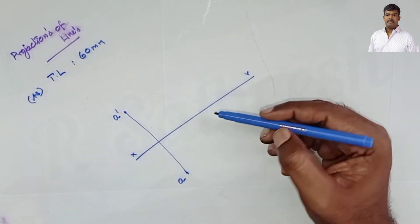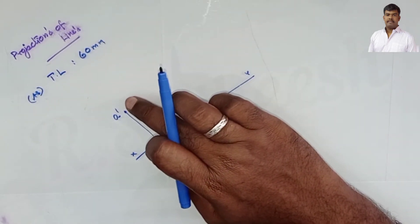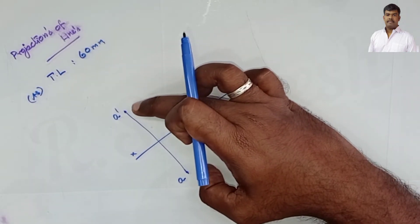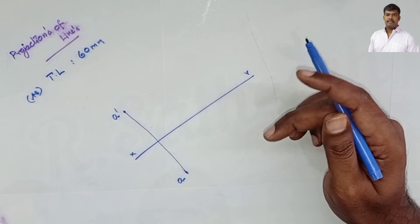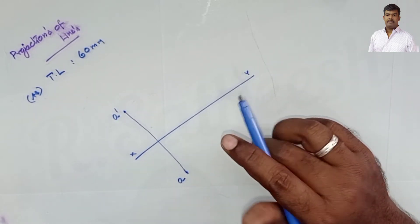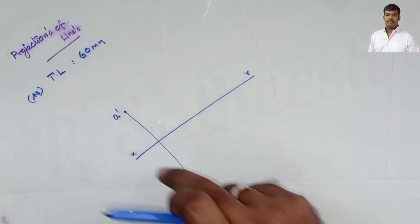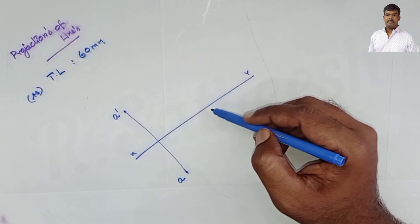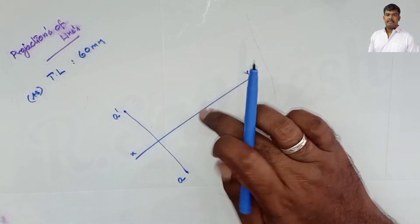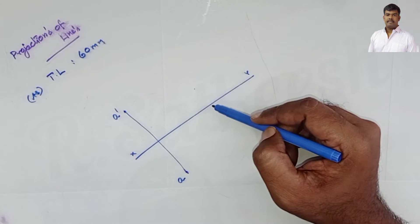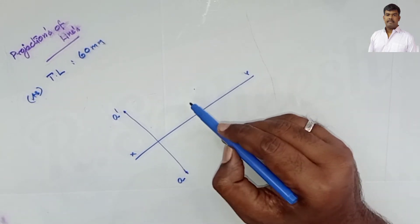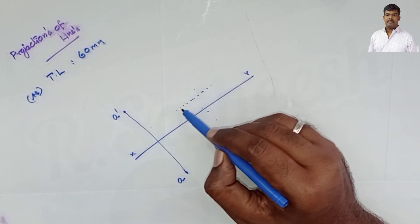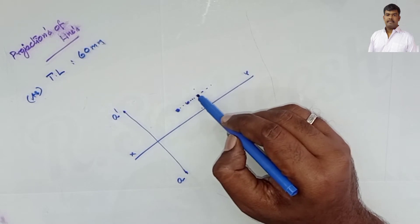For the other end B: 20mm above HP and 25mm in front of VP. Compared to end A, in this problem end A is the farthest from the reference plane - maximum distance - but end B is nearer to the principal planes. End B is only 20mm above HP and 25mm in front of VP.